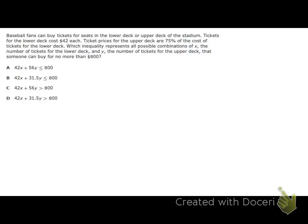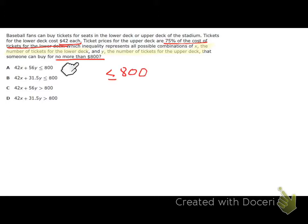Last question: baseball fans can buy tickets to the lower deck at $42 each, or the upper deck at 75% of the cost of lower deck tickets. What inequality represents all possible combinations of x lower deck tickets and y upper deck tickets that someone can buy for no more than $800? 'No more than $800' means the total must be less than or equal to 800, so we're looking at answer choices A and B.